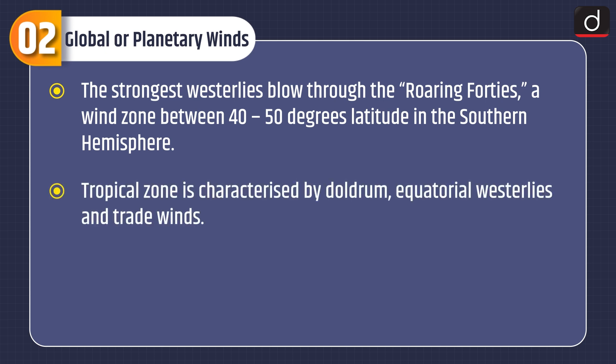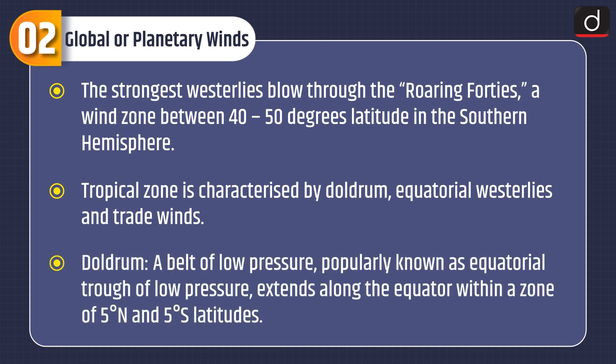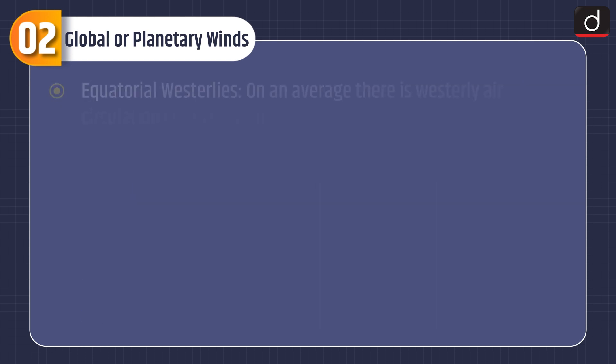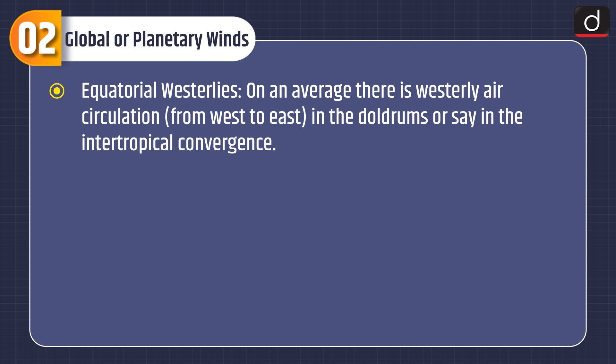The tropical zone is characterized by the doldrums, equatorial westerlies, and trade winds. The doldrums is a belt of low pressure, popularly known as the equatorial trough of low pressure, extending along the equator within a zone of 5 degrees north and 5 degrees south latitudes. Regarding equatorial westerlies, on average there is westerly air circulation from west to east in the doldrums, or in the intertropical convergence zone.